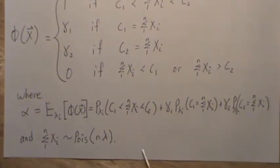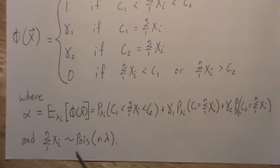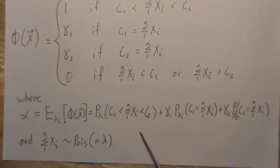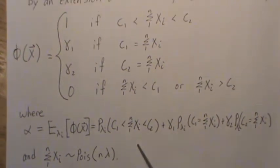Now as a reminder, our test statistic, the sum of the x's also follows a Poisson distribution with parameter n lambda. Now what we do here, solving for C1, C2, gamma 1, gamma 2 by hand, is actually extremely tough.